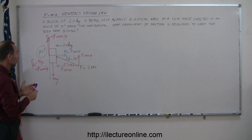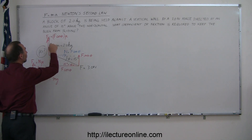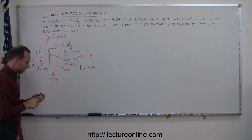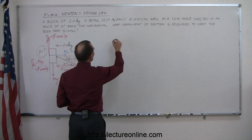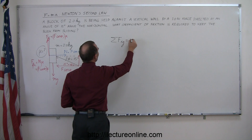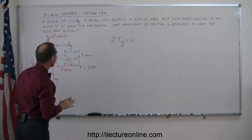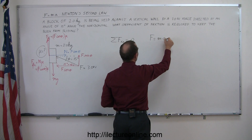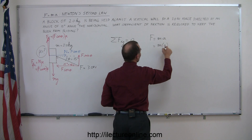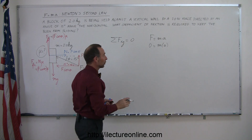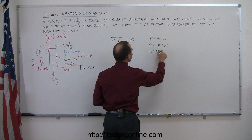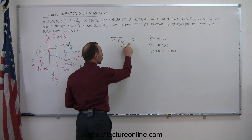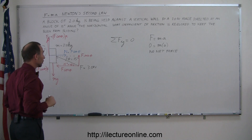If the block is not going to slide down, then f sine theta plus friction must equal mg. We need to find the minimum size of the friction force to make up for the difference. We can say that the sum of all forces in the y direction should add up to zero. If the block is not accelerating, then by Newton's second law, f = ma means a = 0, so f = 0 — there is no net force, meaning all forces in the y direction must add up to zero.